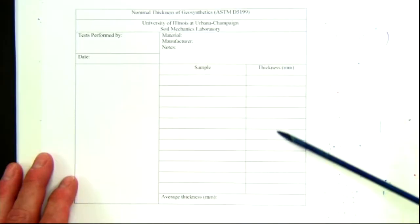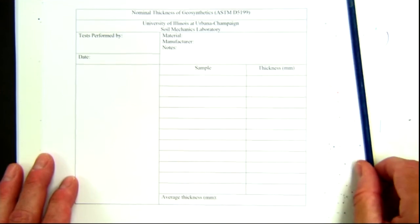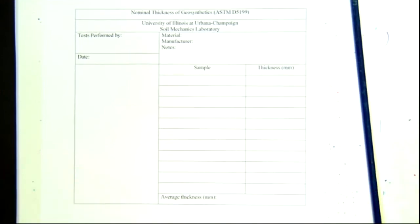I would run five more specimens from across the width of the geomembrane. Enter those on this data sheet in this column here, and then an average entered. The average for the five specimens that I just tested is 0.733.